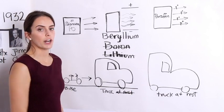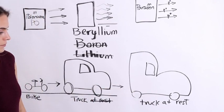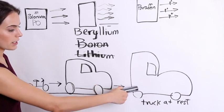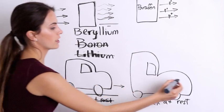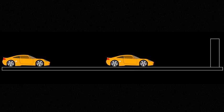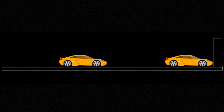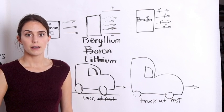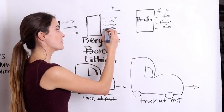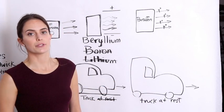Now we have two trucks. This one is at rest and this one is approaching it at a high speed. Once this truck crashes into this one, this truck is going to start moving.